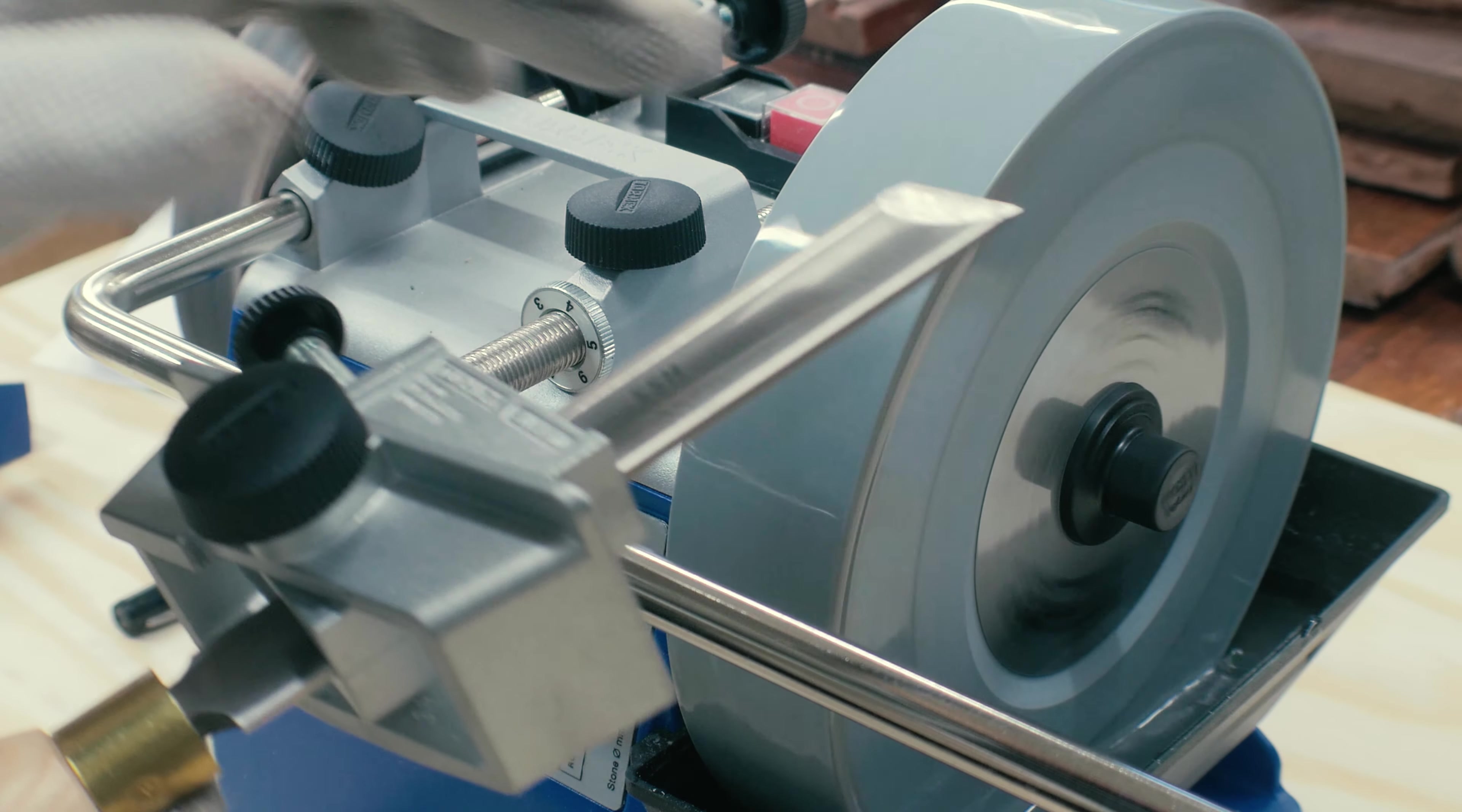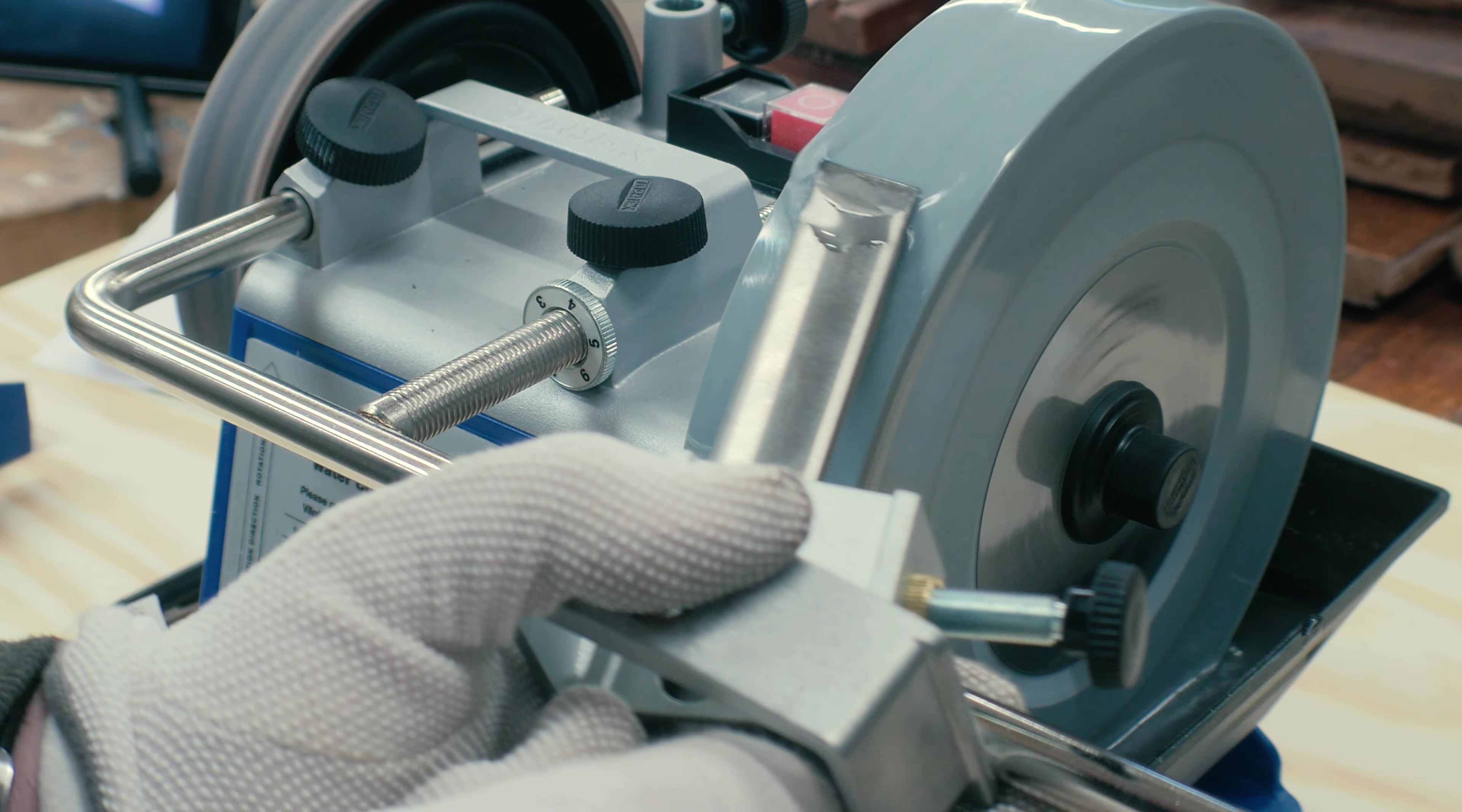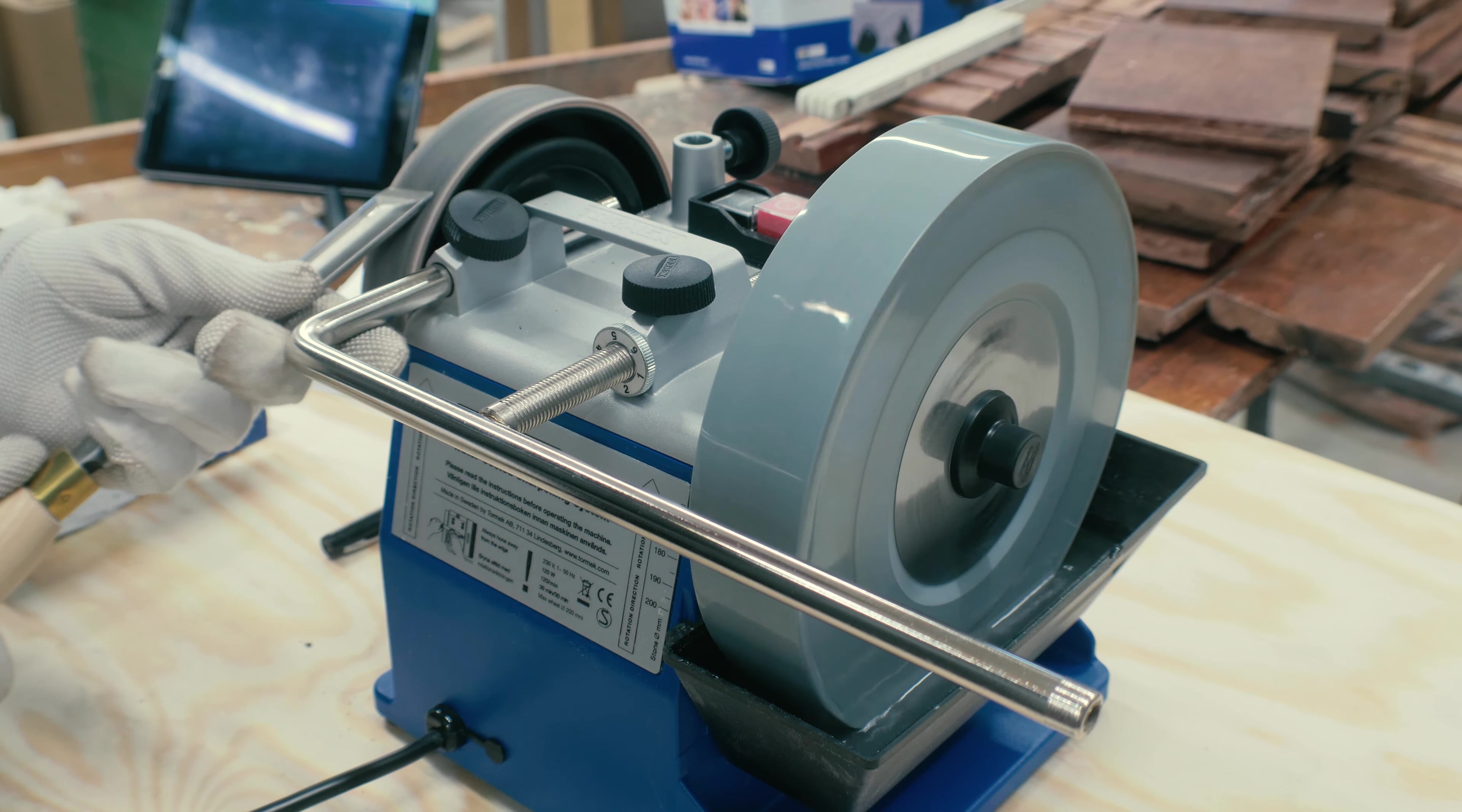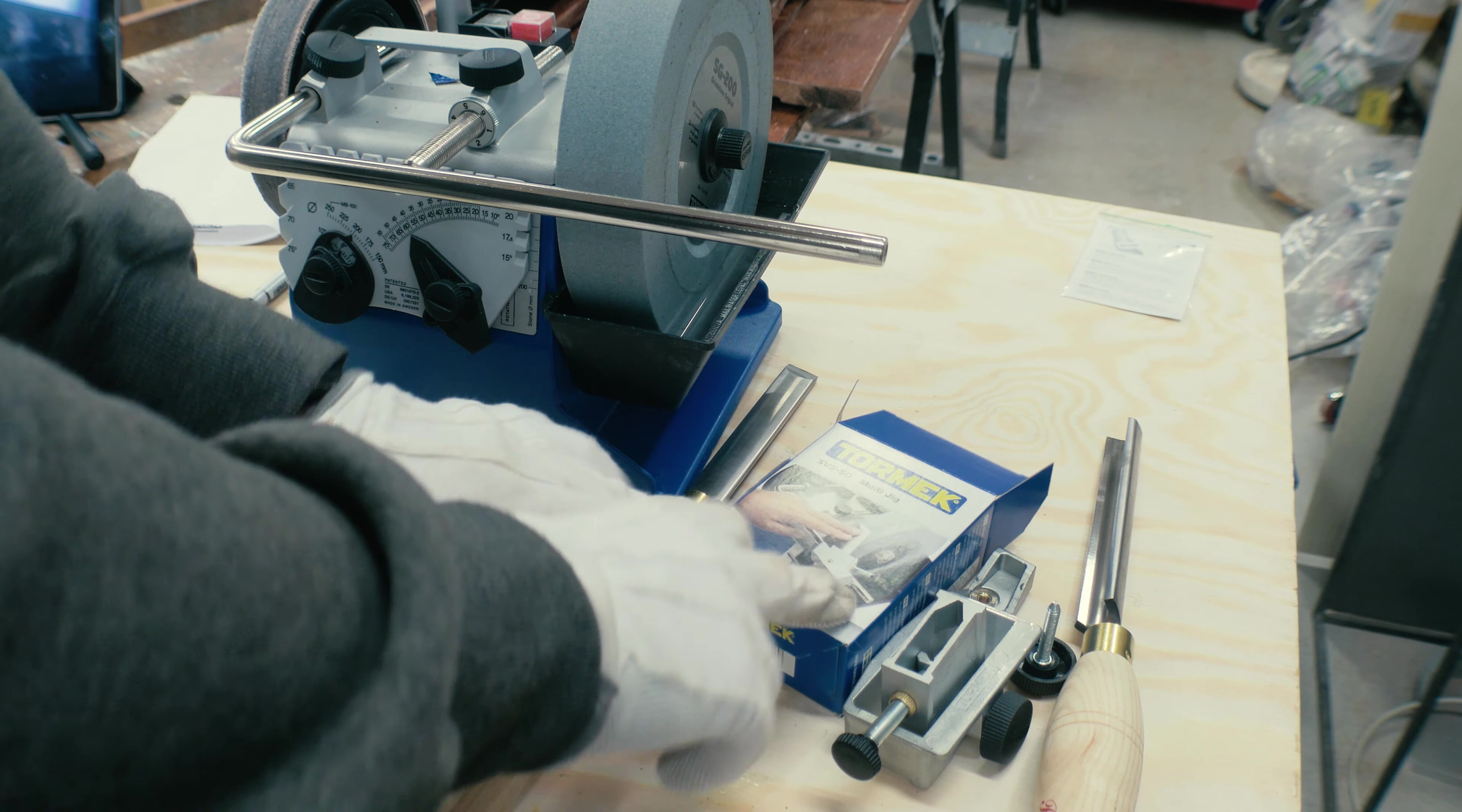To take the other side of the skew chisel just turn the tool around. Taking it off and doing the leather wheel by free hand. Okay, there we have it. That was the unpacking, the assembly and the test of the SVS-50 multi jig.